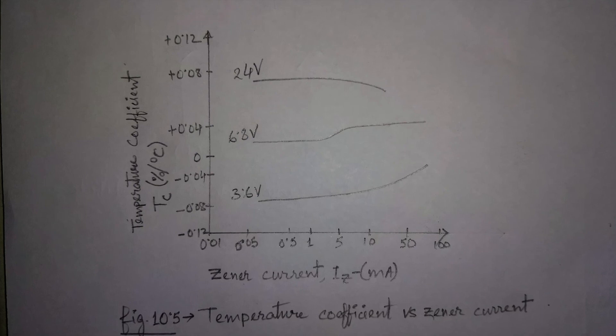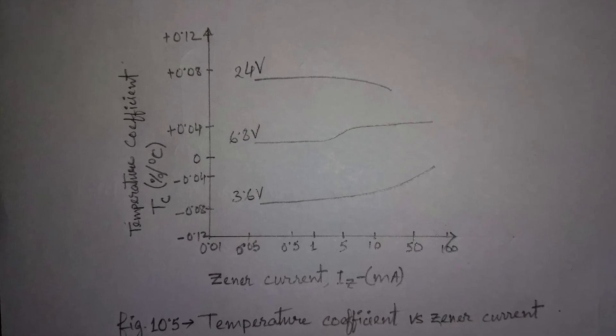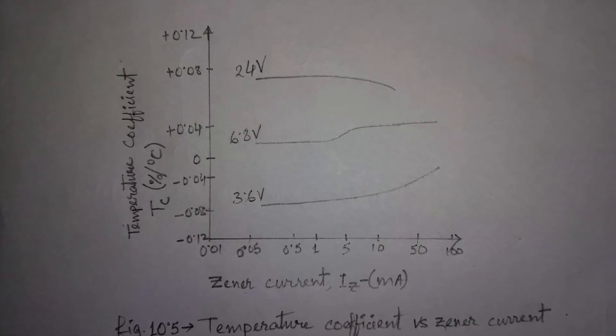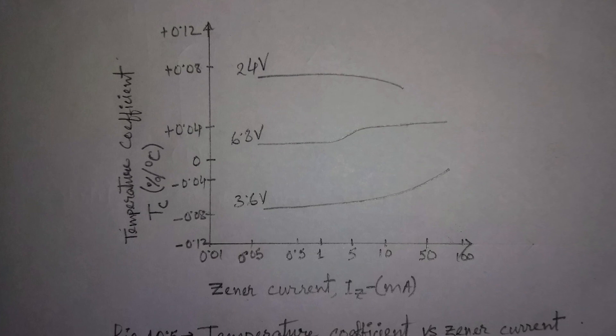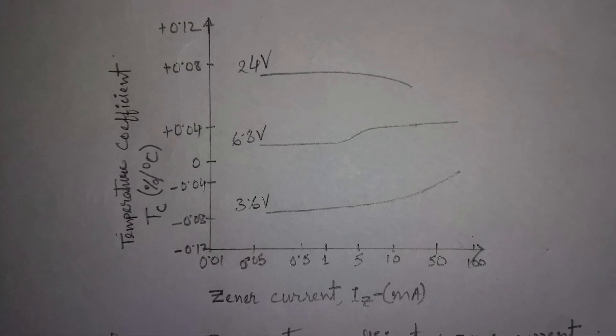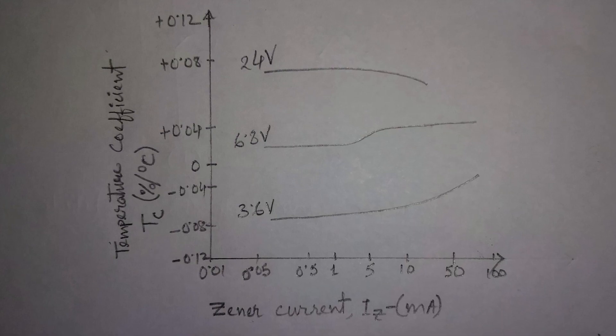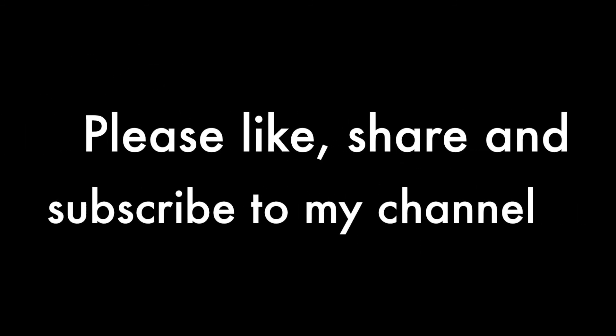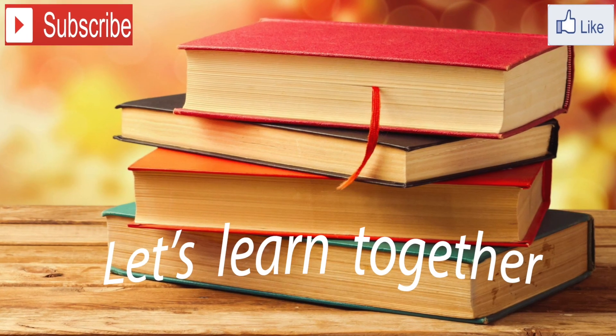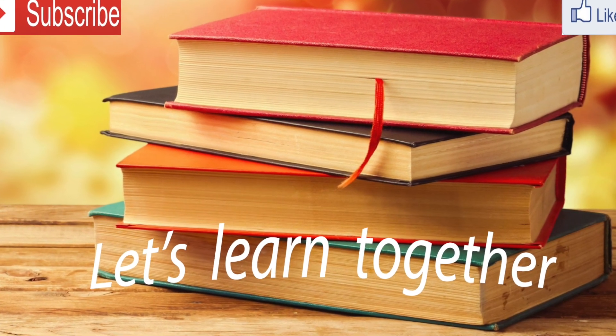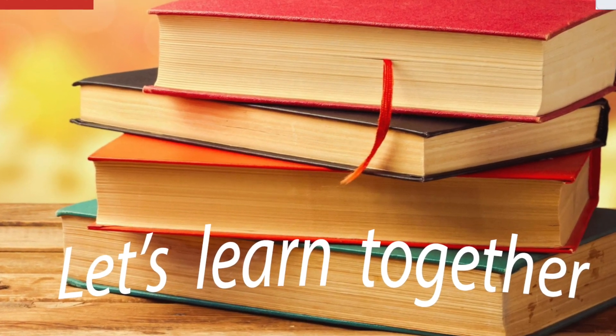This figure shows the temperature effects, that is, the change in temperature with current. T0 is the temperature at which VZ is defined.